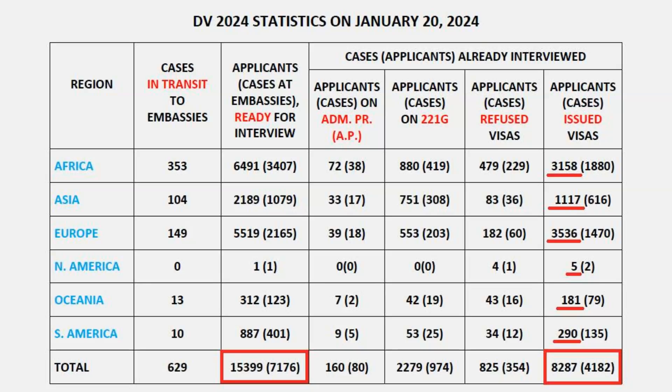This brings the total number of visas issued so far in the DV 2024 program to 8,287. Knowing that there are about 55,000 visas allocated to DV 2024, that means around 47,000 remain to be issued. However, some of those have already been booked by cases currently awaiting interview. That takes us to the second item: the number of applicants currently ready for interview, which stands at 15,399.